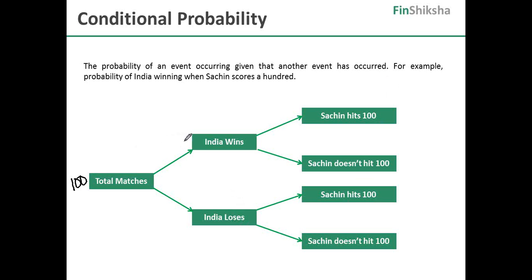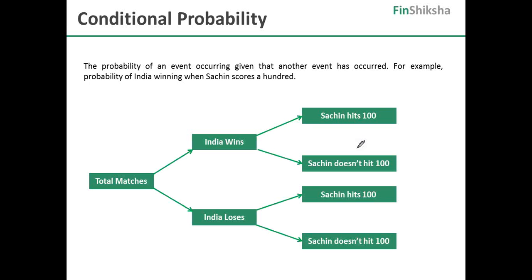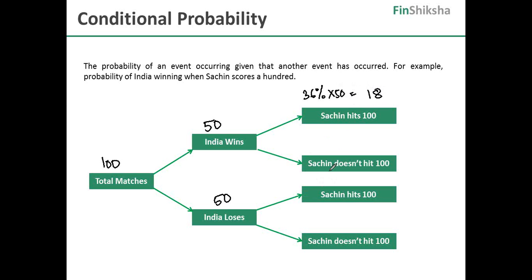There is a 50% probability of India winning a match — that's what's given. So out of 100 matches, India wins 50 and India loses 50. We have also been given that when India wins, 36% of those matches Sachin scores 100. So India wins 50 matches, 36% of these 50 matches he scores a century. So 36% of 50 is 18 matches when Sachin hits 100 out of these 50 matches. The remaining 32 matches he does not hit 100.